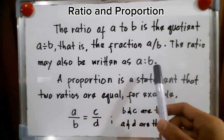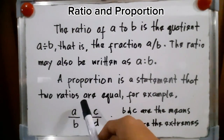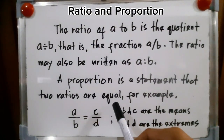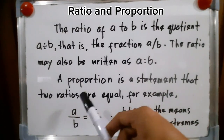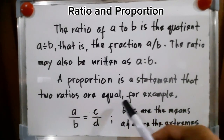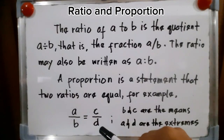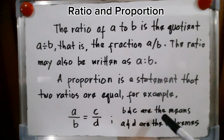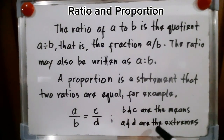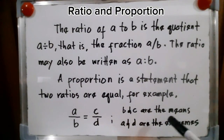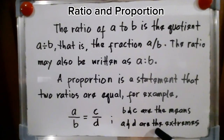A proportion is a statement that two ratios are equal. Proportion tells that two ratios are equal. For example, A over B is equal to C over D. B and C are the means — they are called means. A and D are the extremes. Don't forget that B and C are the means and A and D are the extremes.